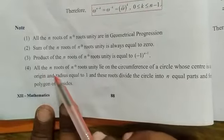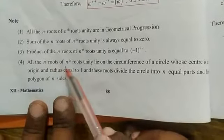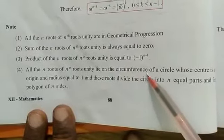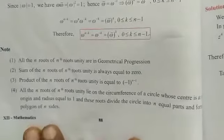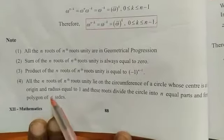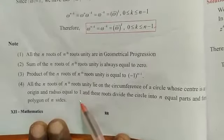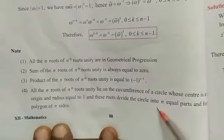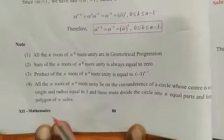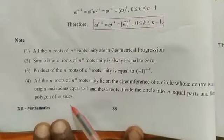All the n roots of nth root of unity lie on the circumference of a circle whose center is at the origin and radius equal to 1. And these roots divide the circle into n equal parts and form a polygon of n sides.